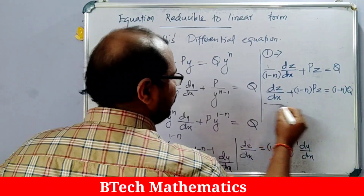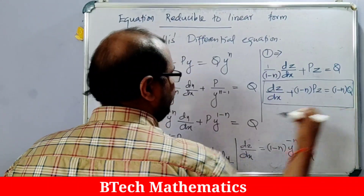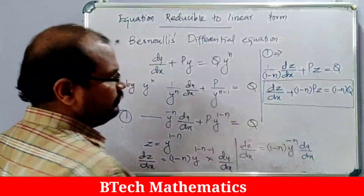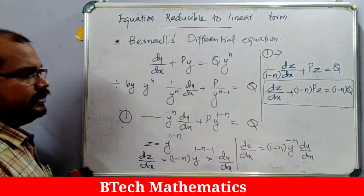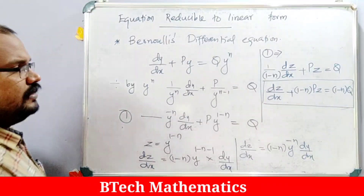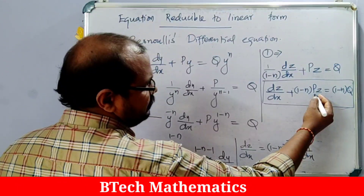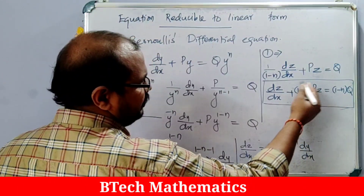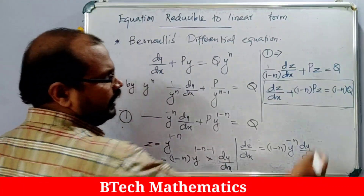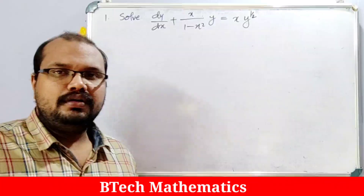Now it is a linear differential equation in z, where the dependent variable is z and the independent variable is x. Here we can consider P as (1-n)·p and Q as (1-n)·q.